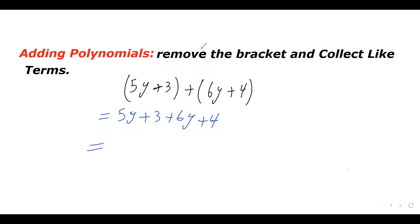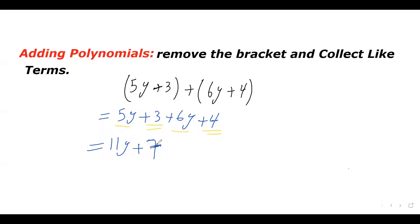Now we have to collect like terms. Let's see what our like terms are. I have 5y here and 6y here — these two are like terms. And then the two constant terms are like terms. So let's add them up. 5y plus 6y: we write down the variable and add the coefficients, so 11y. And then 3 plus 4, that's just positive 7.